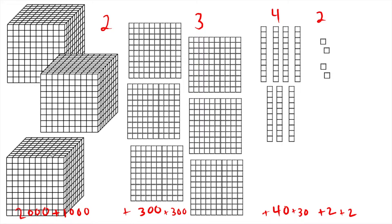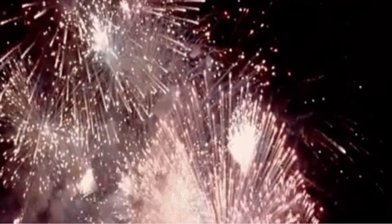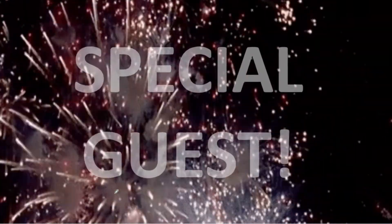When 2,000 and 1,000 go together, we get 3,000. When 300 and 300 go together, we get 600. When 40 and 30 go together, we get 70. And when 2 and 2 together, we get 4. Now let's see how our special guest thinks about it.